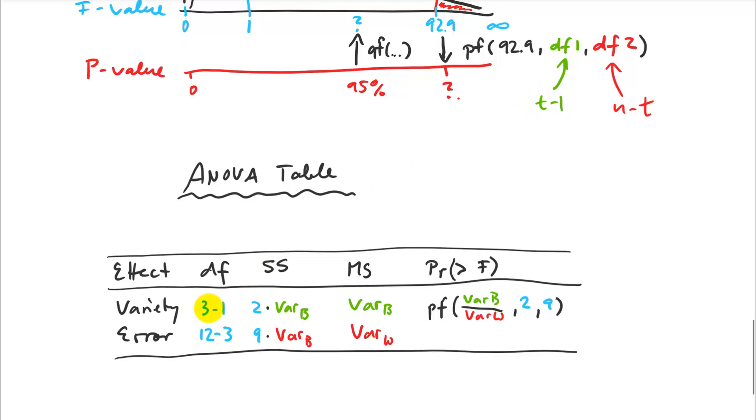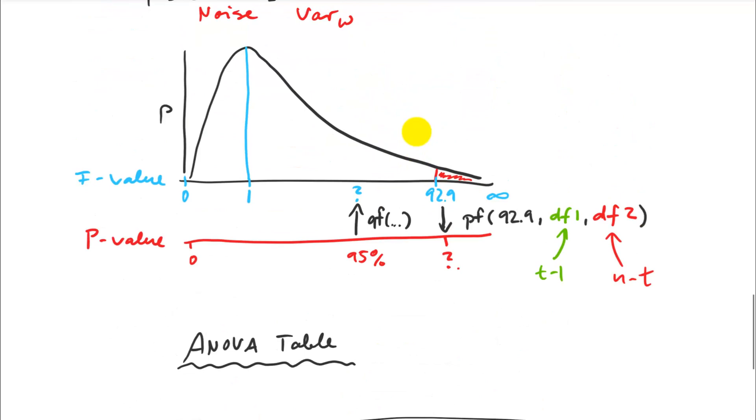And my error term, that's my variance within, so that's the residual error that I can't explain, that had a degree of freedom of n minus t, so the total number of samples minus the number of treatment levels. And then what's called mean squares, so mean squares is just another word for the variances, so I have my variance between and my variance within here.